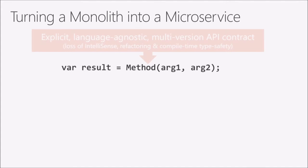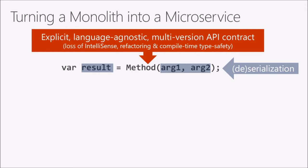First, you have to define an explicit, language-agnostic, multi-version API contract. Your service will be version one, version two, version three, and clients may be calling different versions. You need to maintain backward compatibility because you can't update clients and servers at exactly the same time. When you switch from a method call to a network request, you lose things like IntelliSense, refactoring in Visual Studio, and compile-time type safety. So you gain the benefits of microservices, but at significant cost.